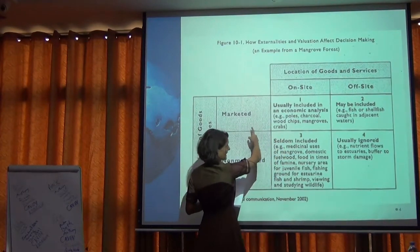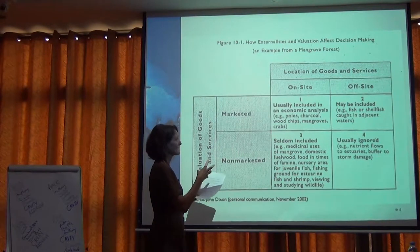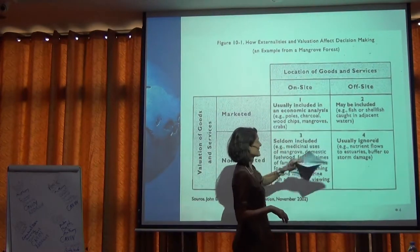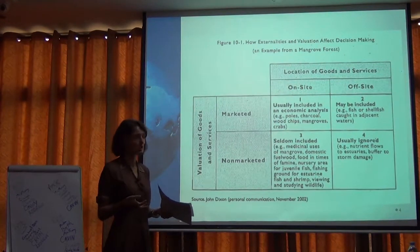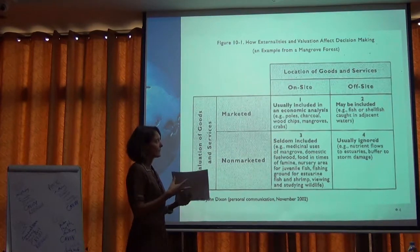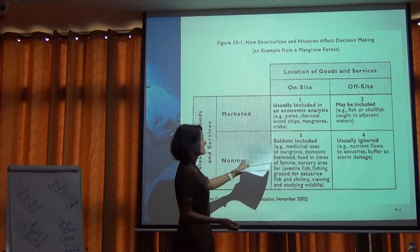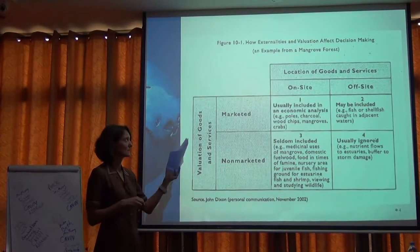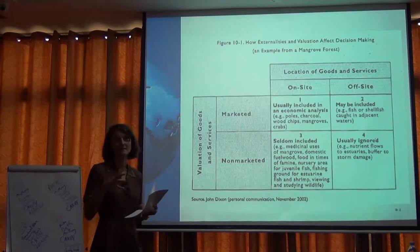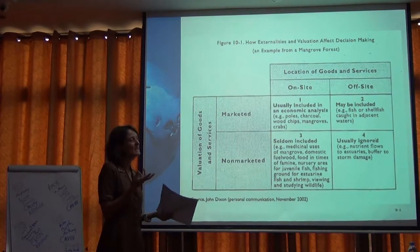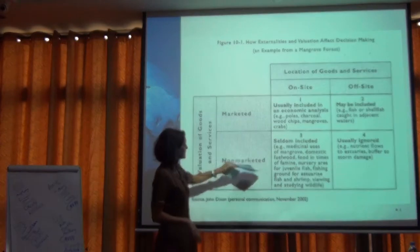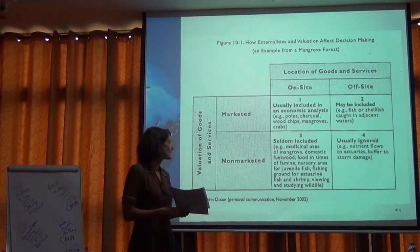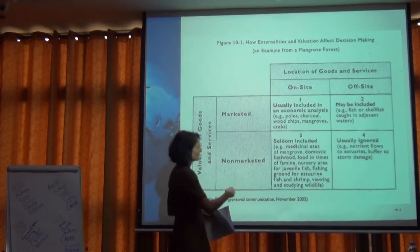Even things that have a market — so maybe fish or shellfish — but that are off-site can be missed. This is an example from a mangrove forest: the mangrove forest provided a nursery for fish when they were young, and then the fish dispersed beyond the mangrove. There's a clear market for fish, but they might not be included in the valuation of this mangrove forest because it's not co-located. It's somewhere beyond the mangrove and so it's easily forgotten, though not always.